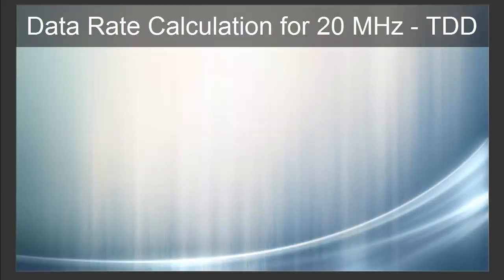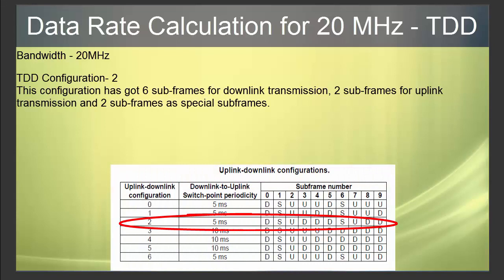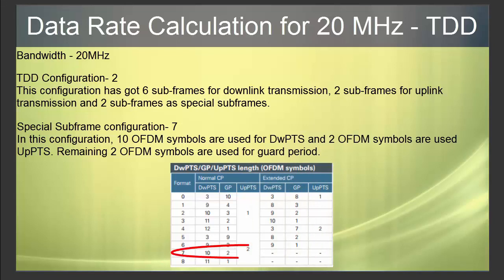Now let's look at data rate calculation for TDD. Whatever we calculated before was for FDD. For TDD systems, throughput calculations are more complex because the same spectrum is shared by uplink, downlink, and the guard period. The guard period is used for transition from downlink to uplink. We will consider: bandwidth of 20 MHz, TDD configuration 2, which has 6 subframes for downlink, 2 subframes for uplink, and 2 special subframes. Special subframe configuration 7 is used, where 10 OFDM symbols are used for downlink PDSCH, 2 OFDM symbols for uplink PUSCH, and the remaining 2 OFDM symbols are used as guard period.